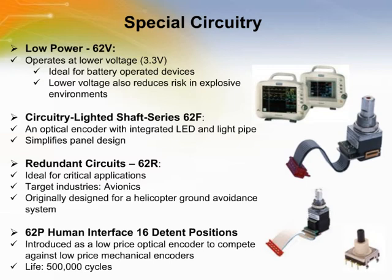The 62R is an optical encoder with a second set of backup circuitry. The encoder will still function in the unlikely case of a failure of the primary circuit. Originally designed for a helicopter ground avoidance system, this product is designed for ultra-critical applications like avionics.